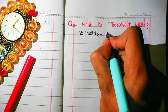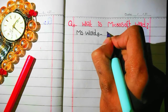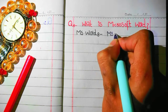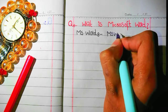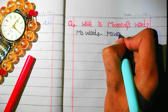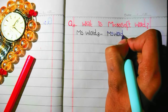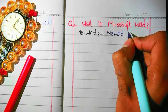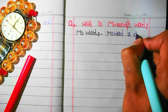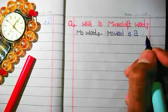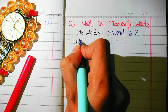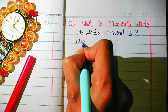Hello viewers, welcome back to my channel. In this video we are going to learn about MS Word. The definition of MS Word is: MS Word is a word processing software.